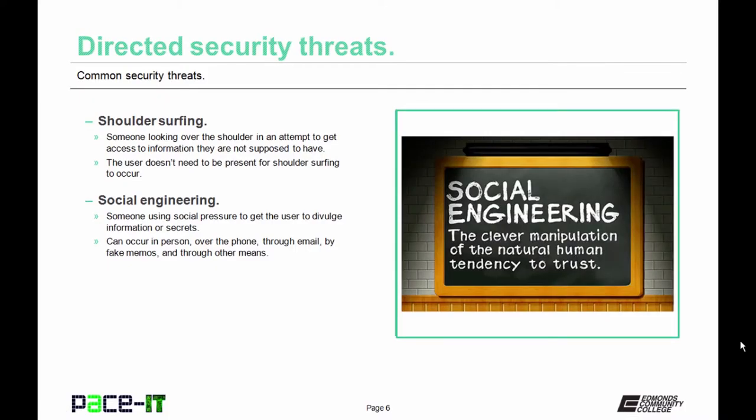Then there's social engineering. This is where social pressure is applied to get a user to divulge information or secrets. Social engineering can occur in person, over the phone, through email, fake memos, and so on — anything that tricks the user into divulging information that they shouldn't.